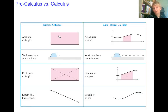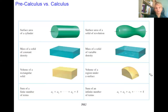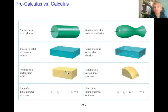The area of a shape with straight lines, like a rectangle, is easy. But the area under a curve, where one side is curved, requires calculus. Similarly, the length of a line segment needs only algebra, while the length of an arc requires calculus. The surface area of a cylinder is straightforward, but the surface area of a solid of revolution or volume of a region under a surface requires calculus.